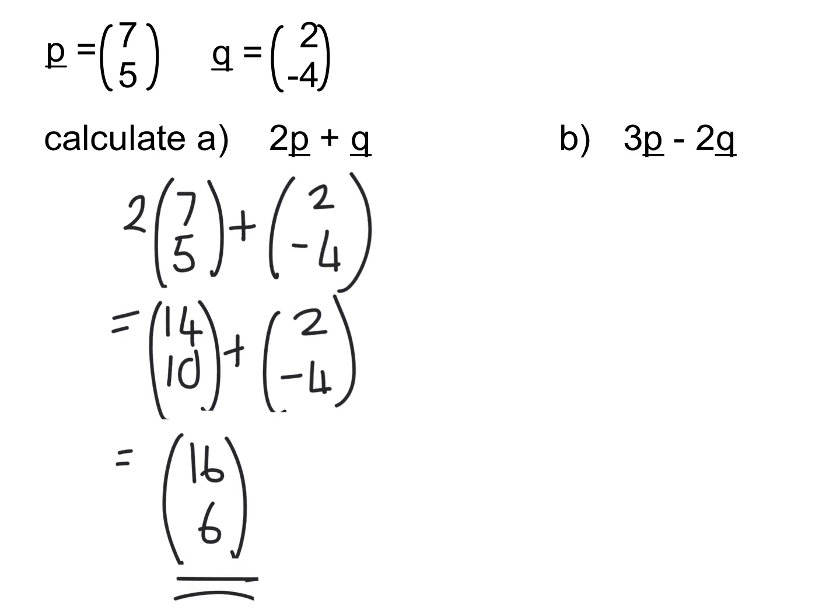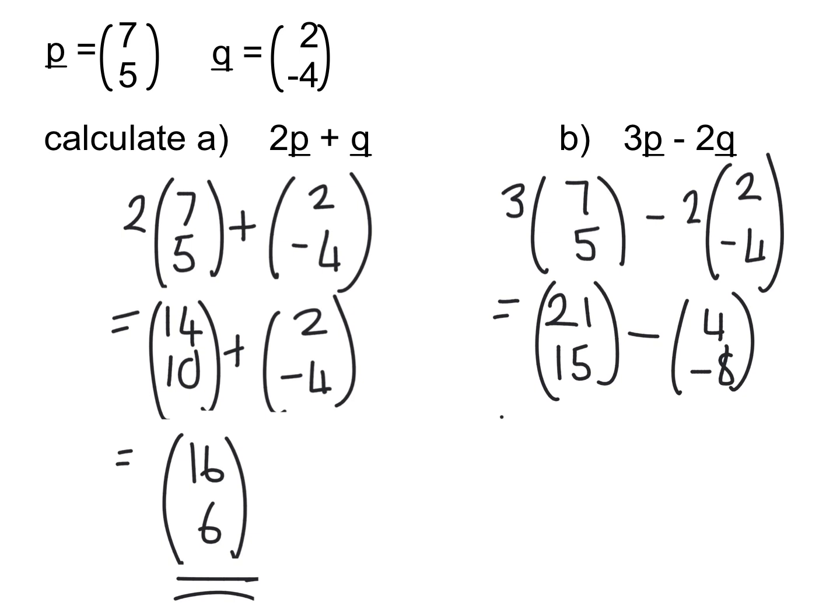On the second one, we're going to have 3 of the first vector. So we're going to have 3 lots of 7, 5. Then we're going to take away 2 lots of the Q vector. So I'm going to multiply this out first. That would give me 21, 15. Take away 4, negative 8. And then take them away this time. So 21 take away 4 would give you 17. And then it would be 15 minus minus 8, which really turns into 15 plus 8. And 15 plus 8 is 23.